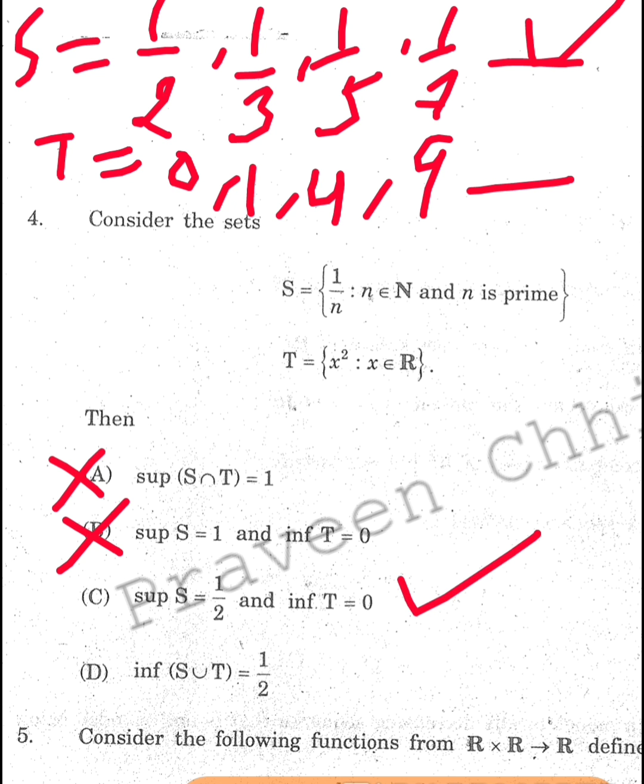And the fourth option, we have to see the union, and the union is 1 by 2, but I don't see 1 by 2 in T, so of course this is also wrong.